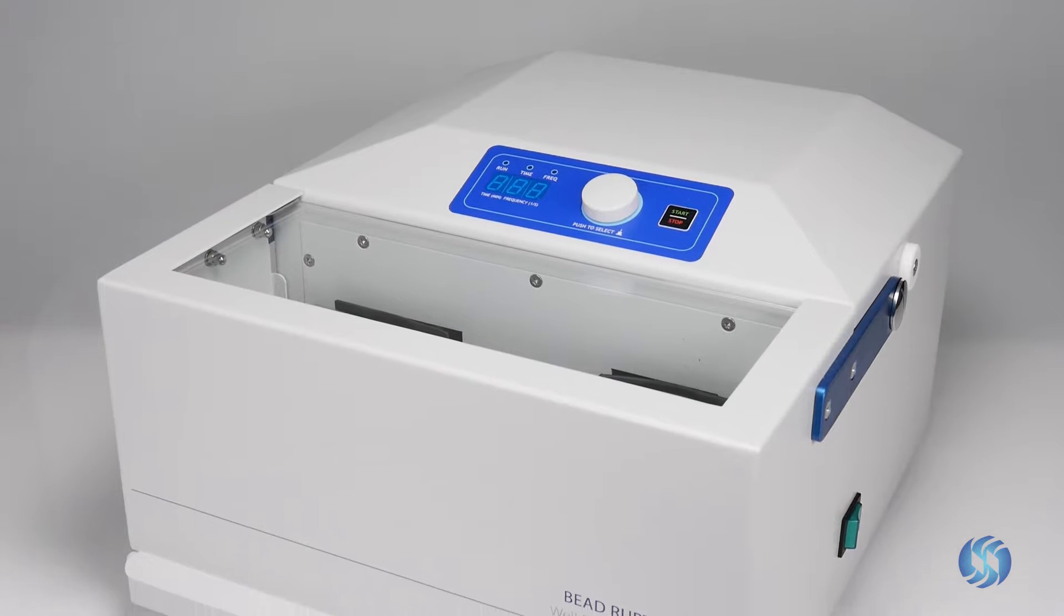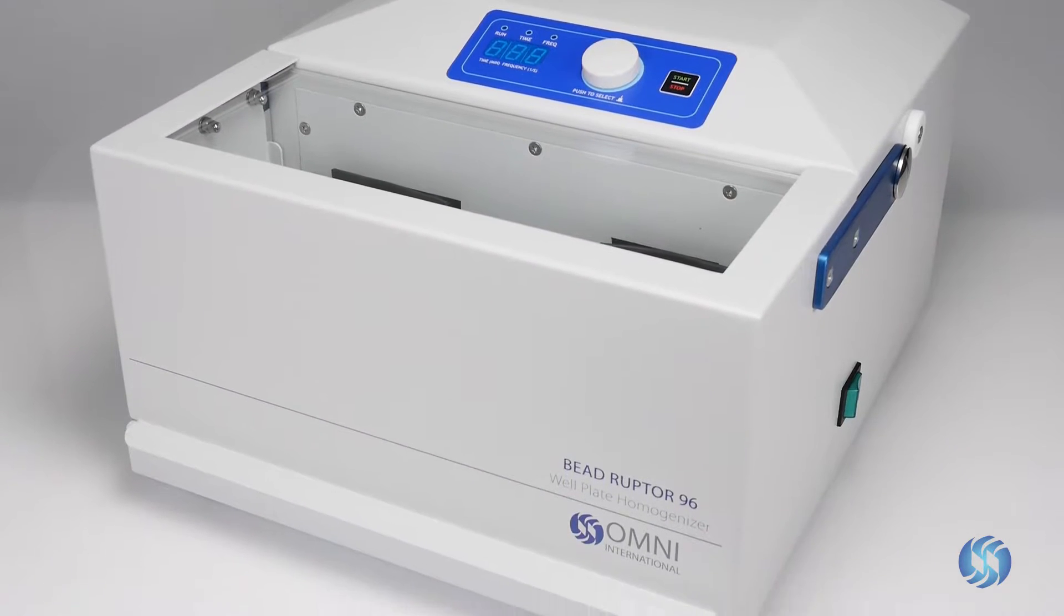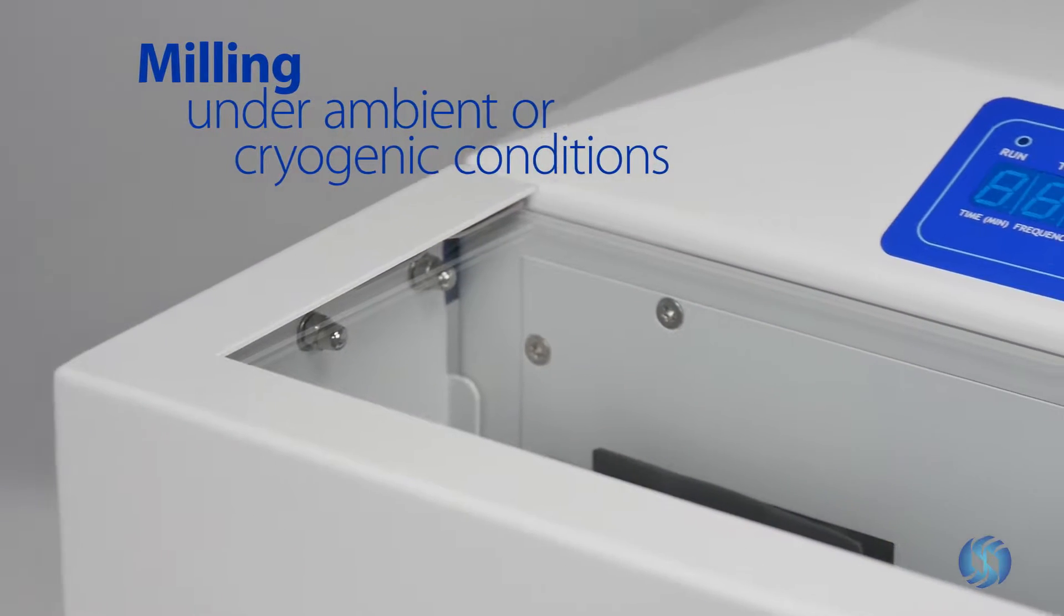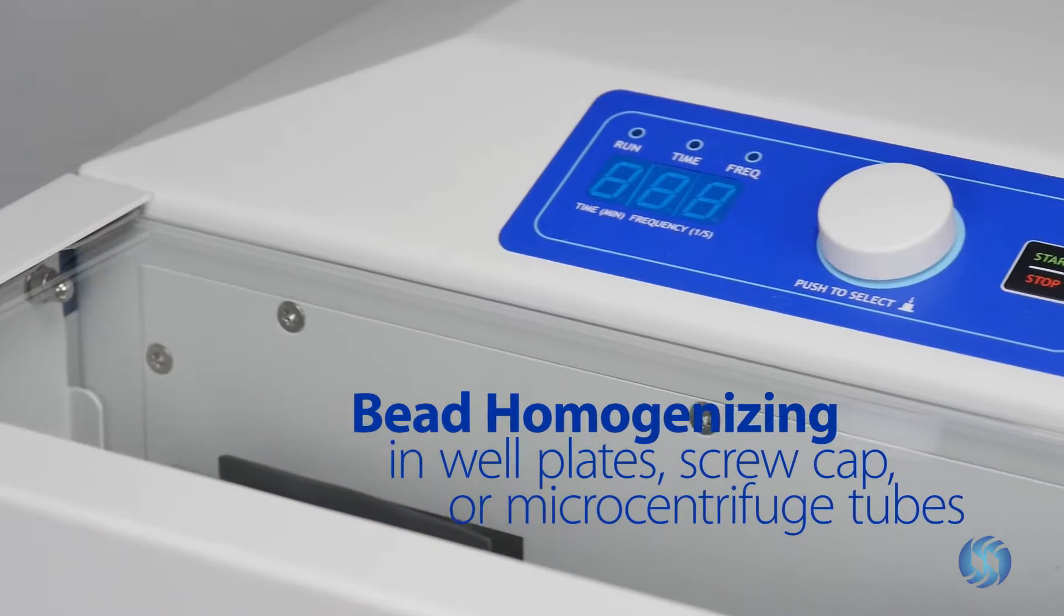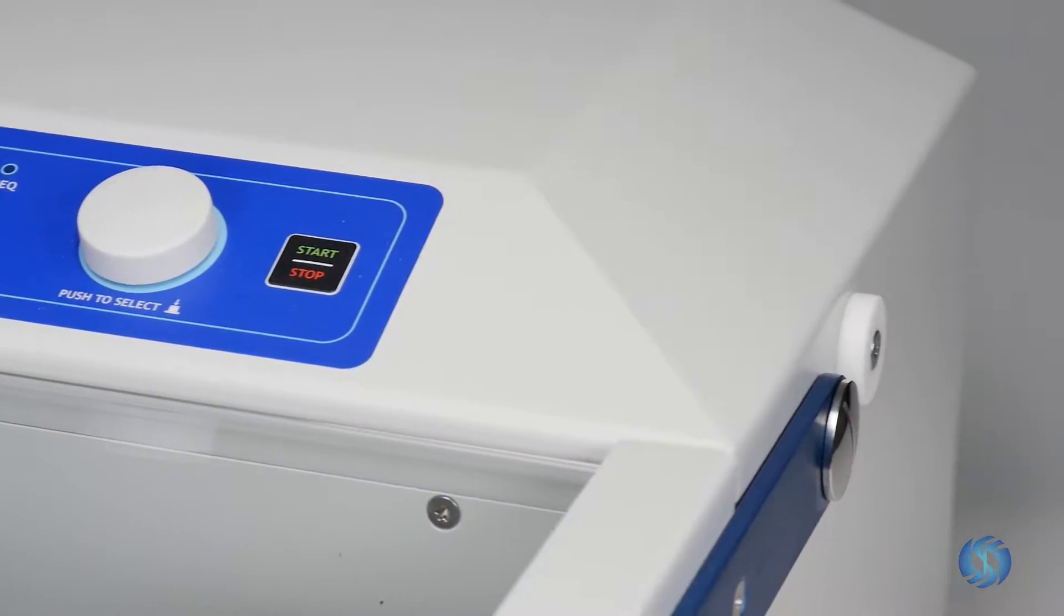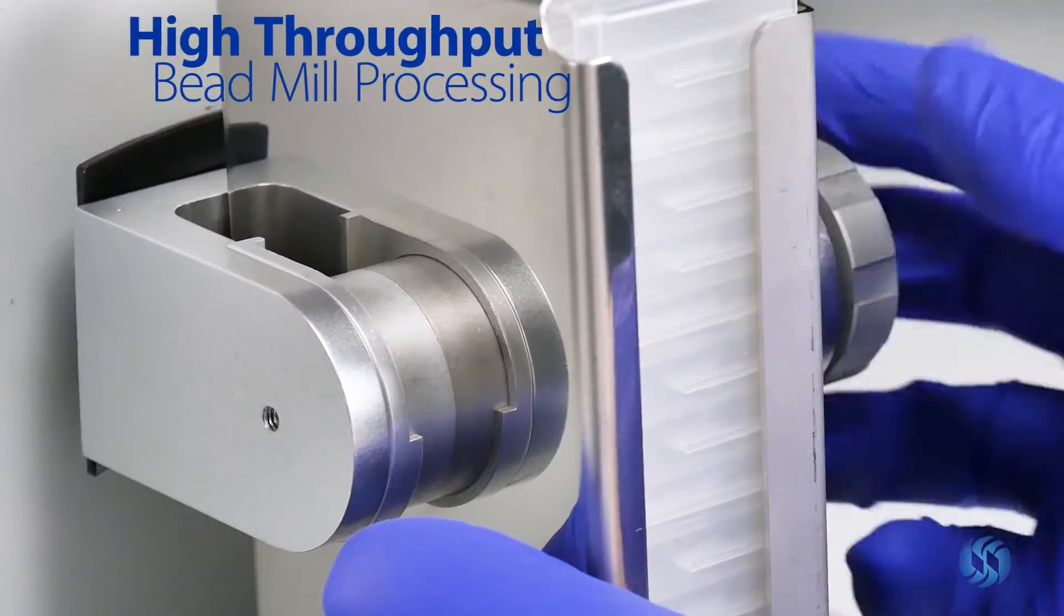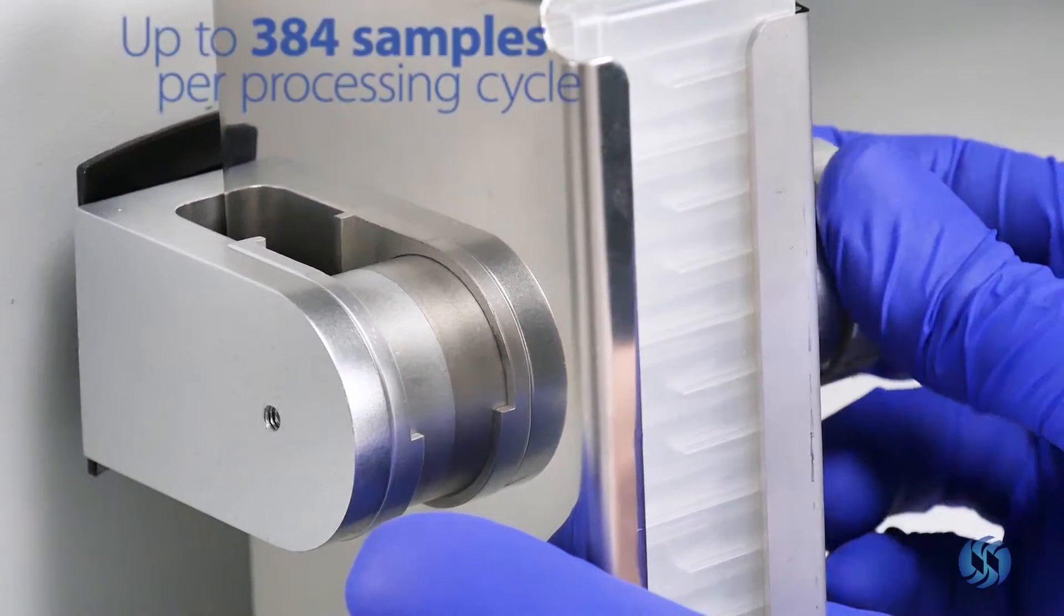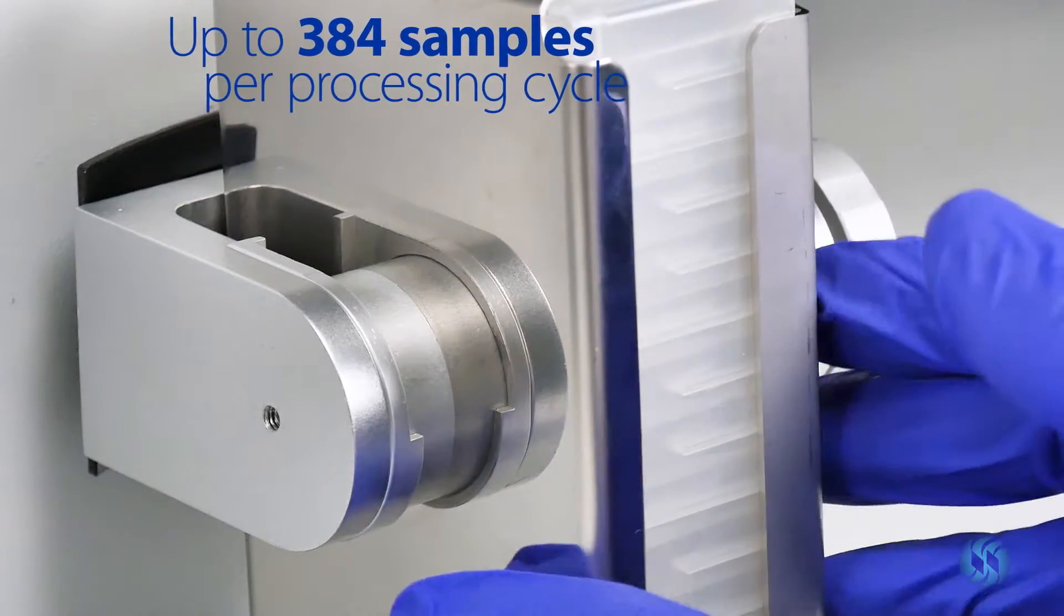The Beadruptor 96 is the most versatile homogenizer on the market. Designed for milling under ambient or cryogenic conditions or bead homogenizing in well plates, screw cap, or microcentrifuge tubes, the Beadruptor 96 is ideal for labs requiring high-throughput bead mill processing and is capable of dissociating up to 384 samples per processing cycle.